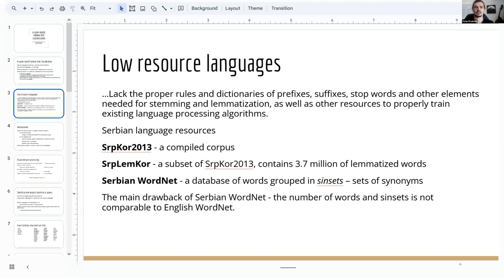Some notable resources are SerbCore 2013, a compiled language corpus, SerbLemCore, a subset of SerbCore which contains around 3.7 million lemmatized words, and Serbian WordNet, a database of words grouped in sets of synonyms called syn-sets. The main drawback is that the number of words and syn-sets is not comparable to English WordNet. In short, we can do language processing, but we expect less accuracy than possible because we could have better data sets to train the algorithms.